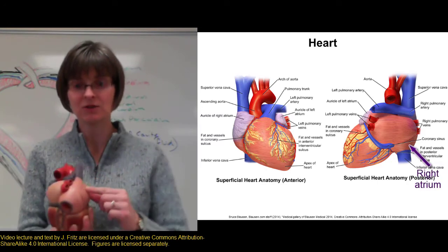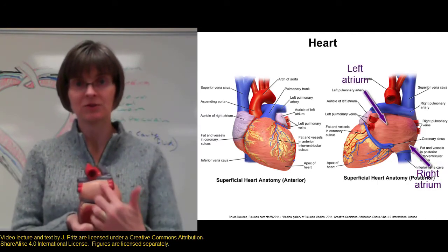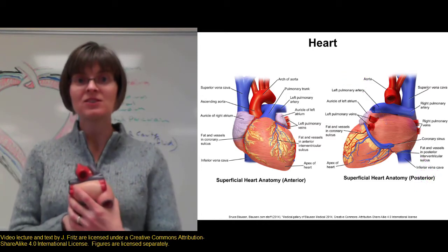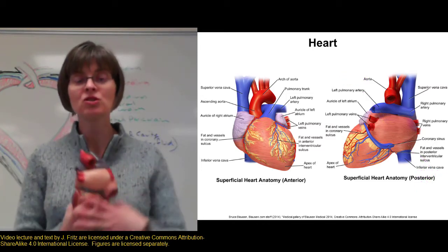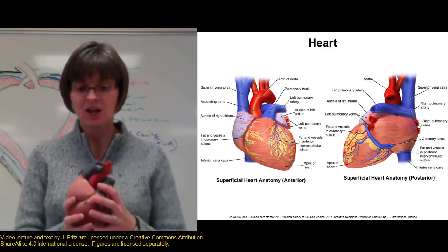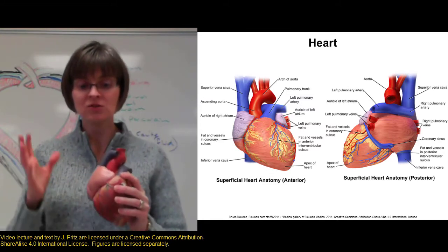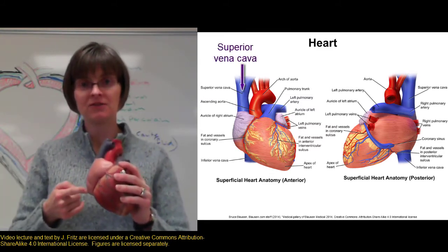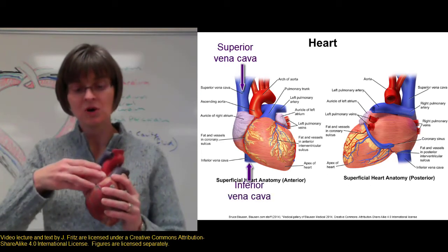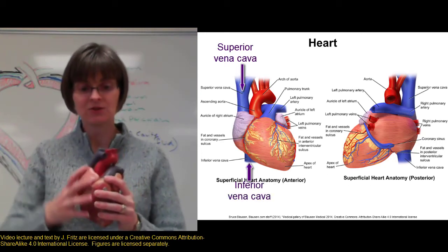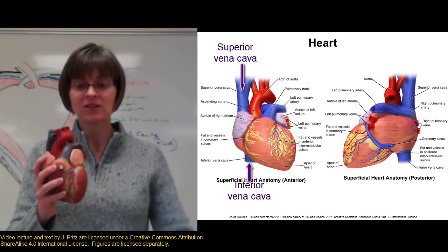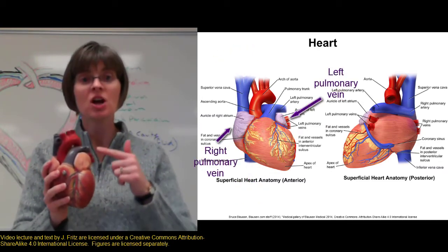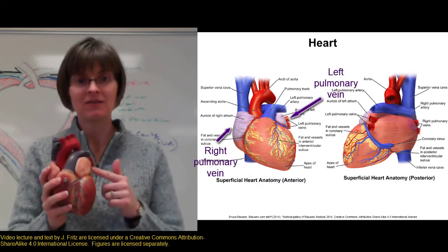Here would be the right atrium, and here's the left atrium. The function of the atria is to collect blood coming to the heart in the veins. Blood coming to the heart from the body comes in the inferior vena cava into the right atrium, and blood that's coming back to the heart from the lungs comes into the left atrium through the pulmonary veins.